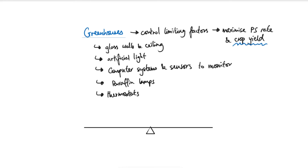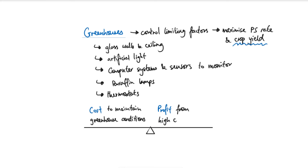In terms of exam questions, many students can explain how to maximize photosynthetic yield using these methods. However, the exam question will probably be phrased as how to maximize the profit farmers can make through using a greenhouse. Your answer must link to the cost needed to maintain conditions in the greenhouse and compare it to the profit gained from a high crop yield. Be careful when reading the question — if it asks how to maximize profit, make sure you mention cost rather than just talking about conditions.